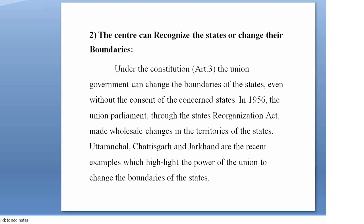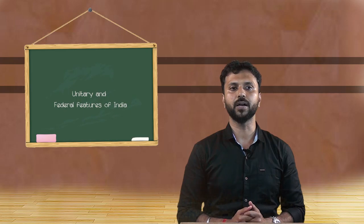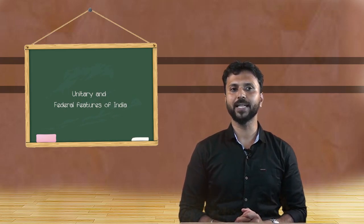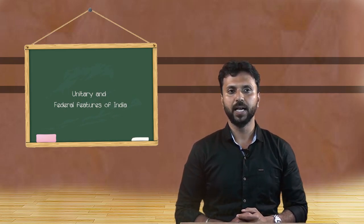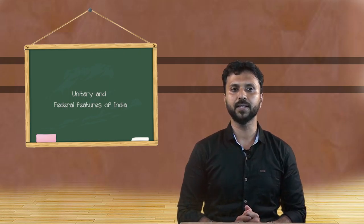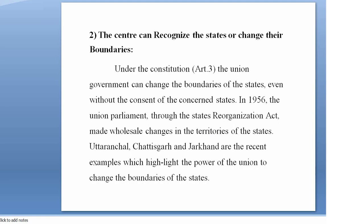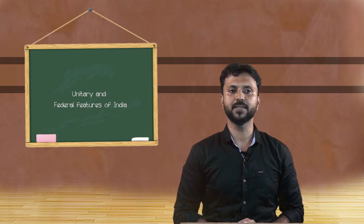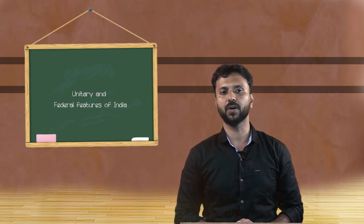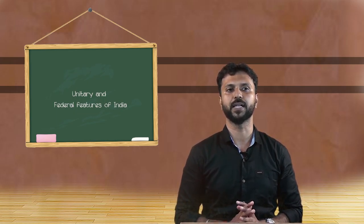The center can reorganize the states or change their boundaries. Under Article 3 of the constitution, the union government can change the boundaries of a state even without the consent of the concerned state. In 1956, the union parliament through the States Reorganization Act made wholesale changes in the territories of the states. Uttaranchal, Chhattisgarh, and Jharkhand are recent examples highlighting the powers of the union to change the boundaries of states.